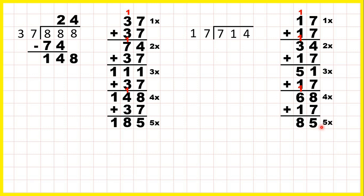We can be fairly confident that we haven't made any mistake in our calculation because, remember, 5 times always ends in a 0 or a 5, and 85 ends in a 5. Now rather than carrying on, we can look back at our question. Taking the first two digits together, we have 71 divided by 17.